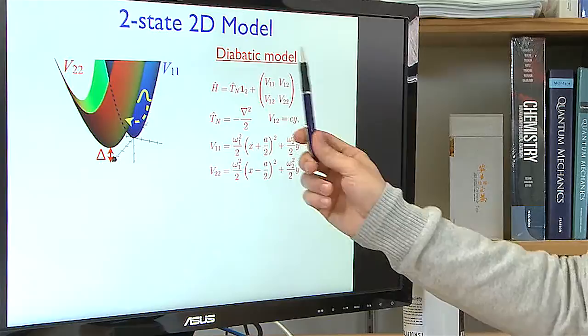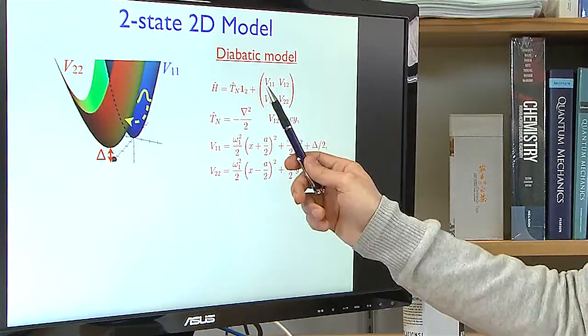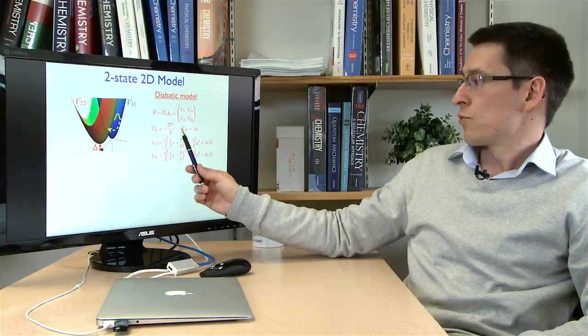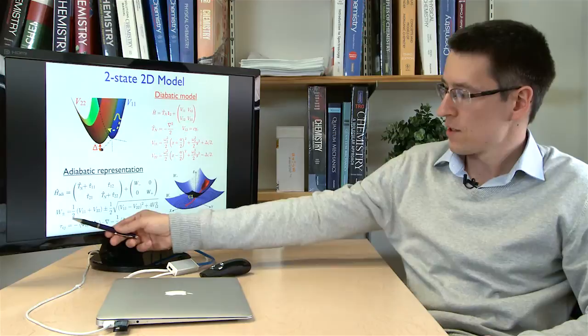We will consider the simplest possible model for conical intersection, which is a two-state, two-dimensional linear vibronic coupling model, which you may know from our videos on the low energy dynamics. This Hamiltonian in diabatic representation consists of kinetic energy for the nuclei and a potential energy matrix that has two diabats — you can think of them as donor and acceptor, V1-1 and V2-2 — and they are paraboloids in two-dimensional nuclear space. They are coupled with linear coupling, and if you diagonalize this diabatic model, you get the conical intersection profile in the adiabatic representation.